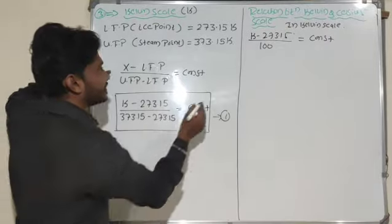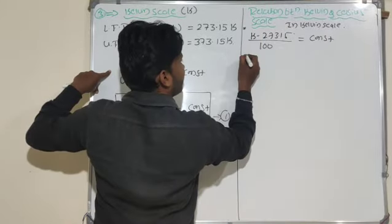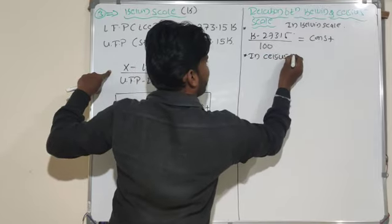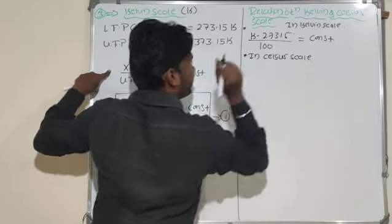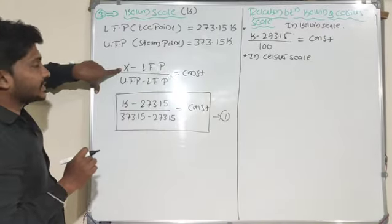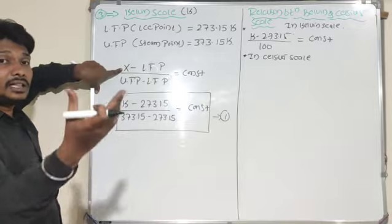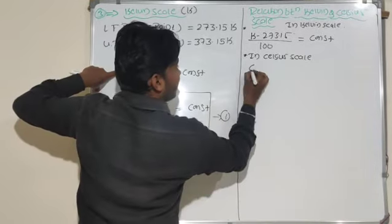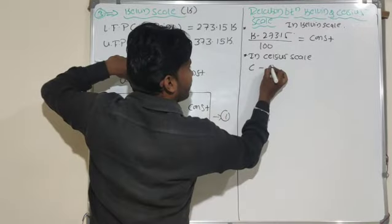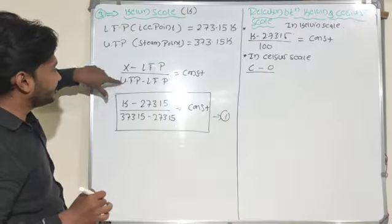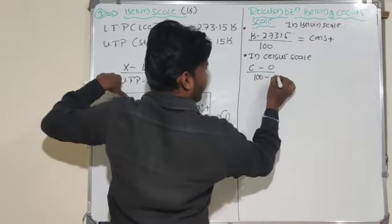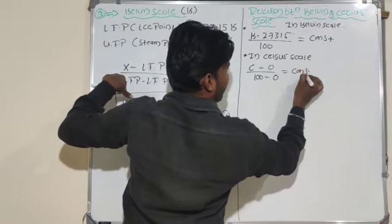For the Celsius scale, the lower fixed point value is zero and the upper fixed point is 100, so 100 minus 0 equals 100. This expression also equals the same constant.